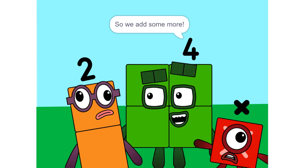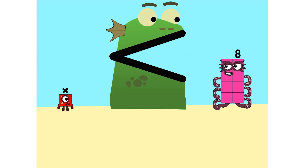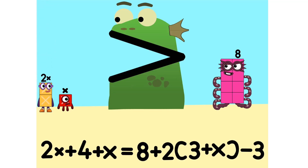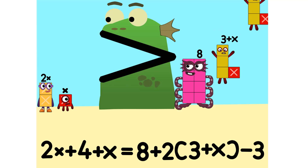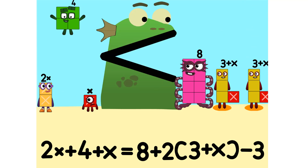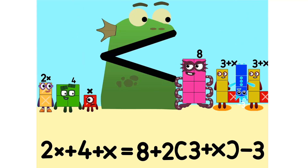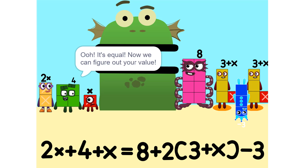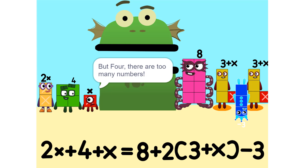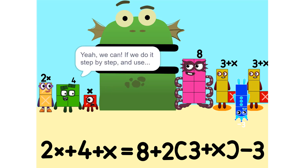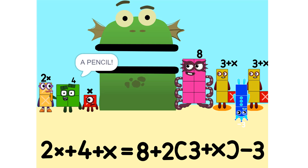Too heavy. So we add some more. 2 times X equals 2X. Nope. It's equal. Now we can figure out your value. But there are too many numbers. We'll never figure it out. Yeah, we can — if we do it step by step, and use a pencil.